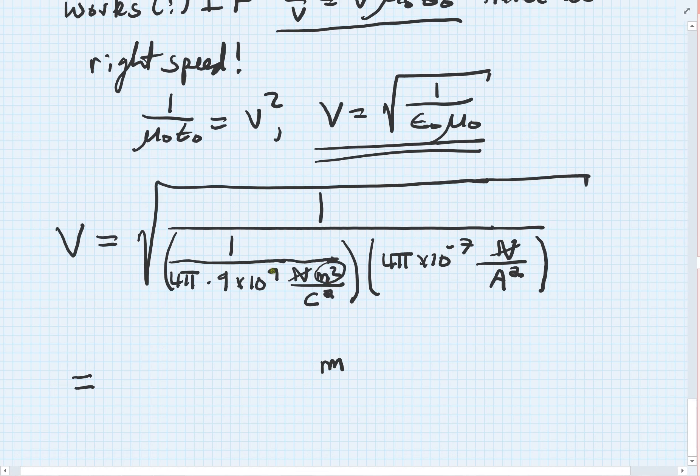Now, if I just look here in the denominator at what I have, the newtons cancel. In my denominator, I have Coulombs in the denominator. C is the denominator of a denominator, so the Coulombs squared are on top here. So, I have Coulombs squared in the denominator divided by amps squared. But amps are Coulombs per second.